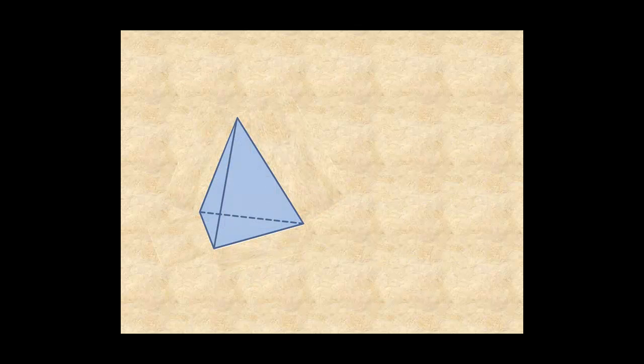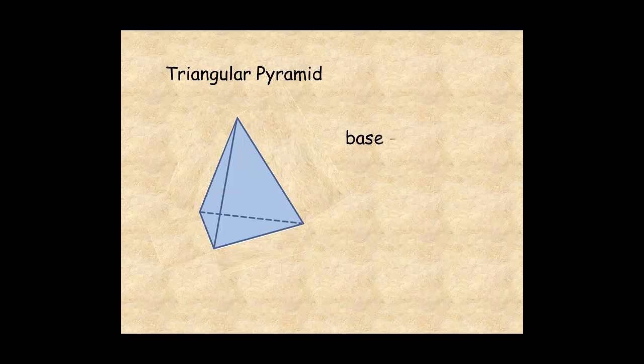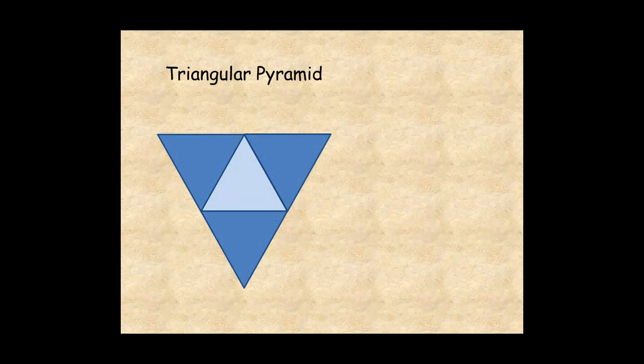Here's an example of a triangular pyramid with a triangular base. It unfolds into a net with a triangular base and three lateral faces. The net for this pyramid is comprised of four congruent equilateral triangles, each 8 inches on a side, and 6.9 inches in height.